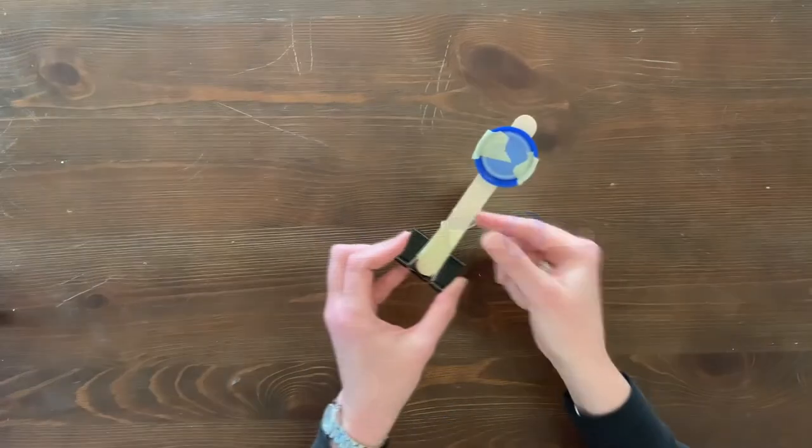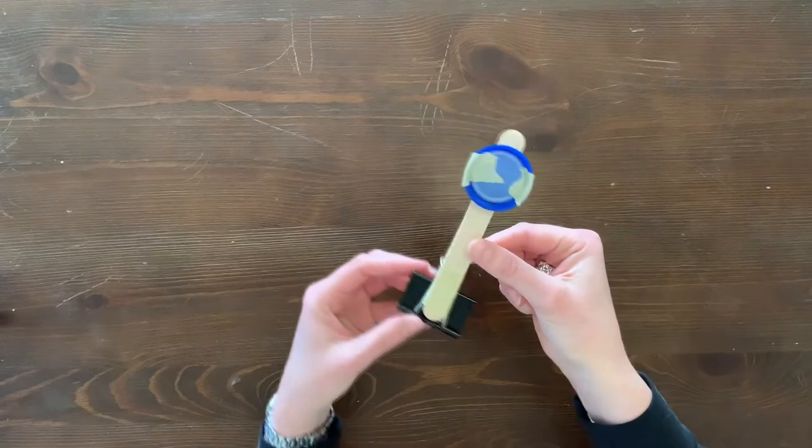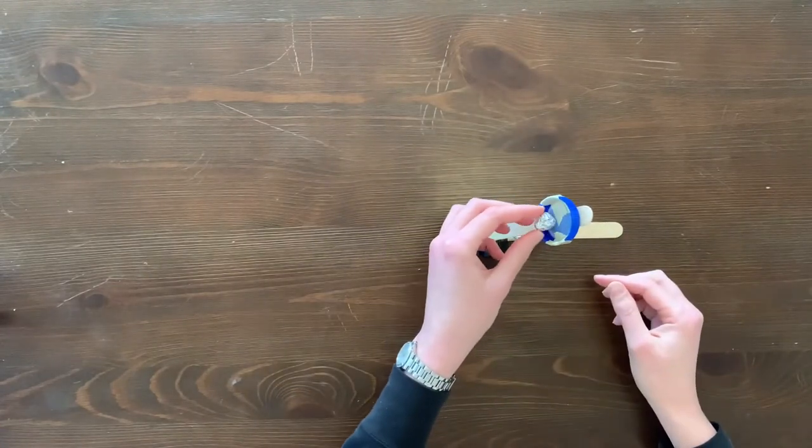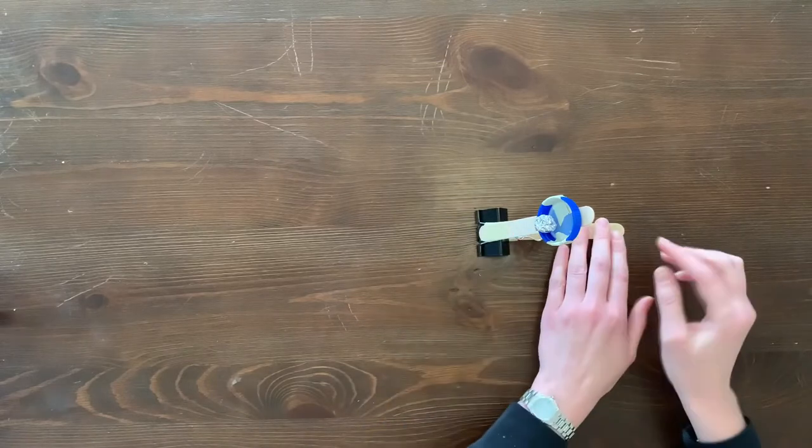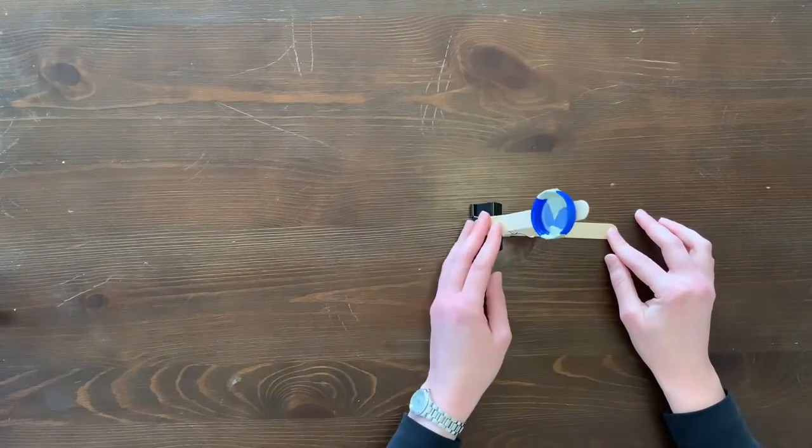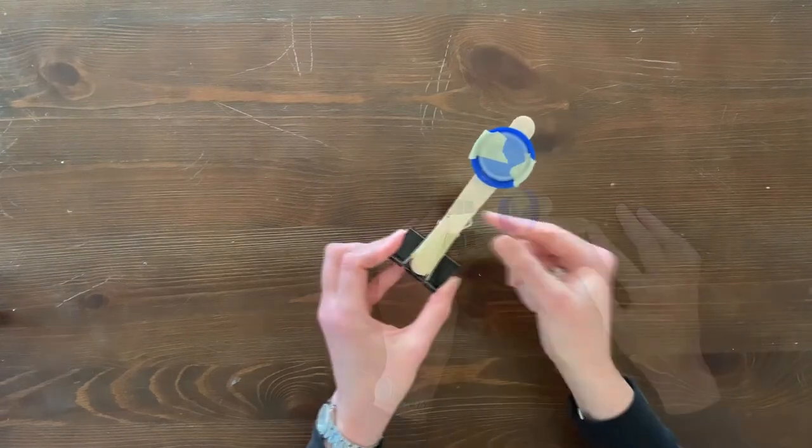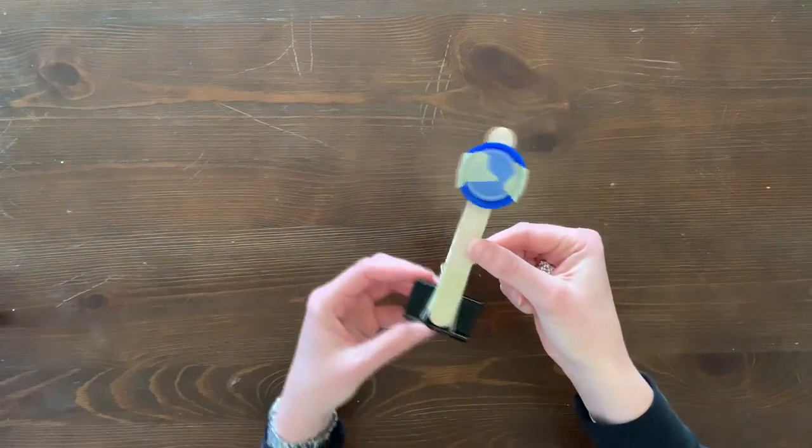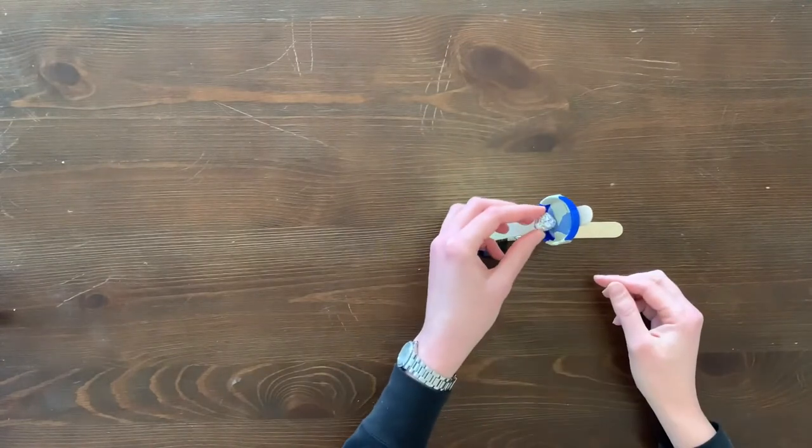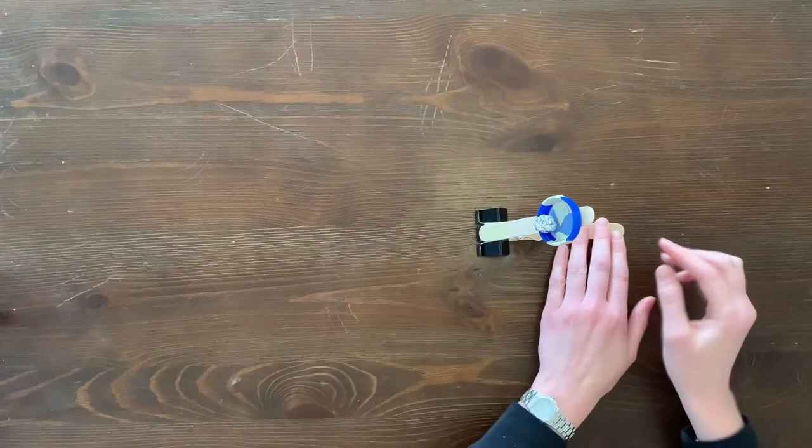So what we just built today was a simple machine called a catapult. Simple machines are mechanical devices that change the direction or magnitude of a force. The lever itself is a simple machine made of a rigid rod pivoted at a fixed hinge or fulcrum. Levers amplify an input force to provide a greater output force which creates mechanical advantage or leverage.